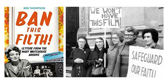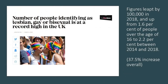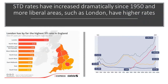Let's look at what's happened since the time that Mary Whitehouse was making her arguments in the 1960s and 1970s. One of the things she argued was that if you keep depicting LGBT issues on television and encourage it in schools, you will get an increase in the number of LGBT people in society. And it just so happens that there has been such an increase — from 1.6 percent to 2.2 percent, which is a 37.5 percent increase. STD rates have also increased dramatically since 1950, with more liberal areas such as London having higher rates.